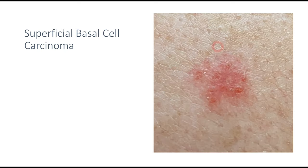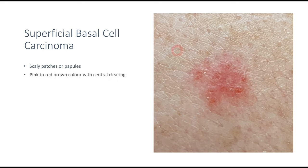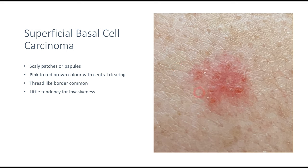In this clinical picture you can appreciate irregular, ill-defined lesions on the skin — quite flat and superficial. This is superficial basal cell carcinoma, characterized by scaly patches or papules. The lesions are pink and red-brown in color with a clear central area. At times you can also appreciate a thread-like border. This subtype has little tendency to invade adjacent structures compared to other subtypes. Since it is reddish-pink, it may mimic psoriasis or eczema, but it progresses more slowly.